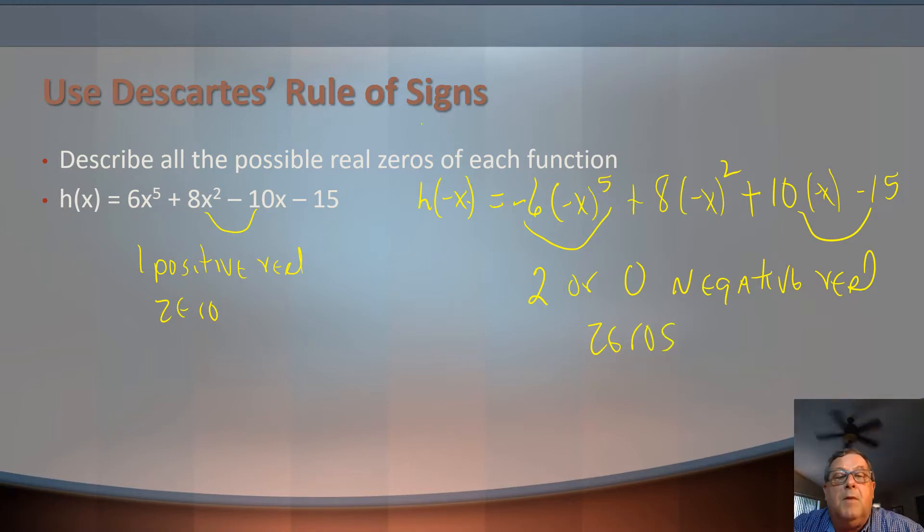What's the most we could have? I could have 1 positive and 2 negative. That's 3. But how many zeros are total? 5. That means I probably got 2 imaginary or 2 complex zeros, at least. Could have 4, in fact, because I could have 1 positive and no negative, and that would leave me with 4 imaginary. That's really kind of a lesson for another moment.